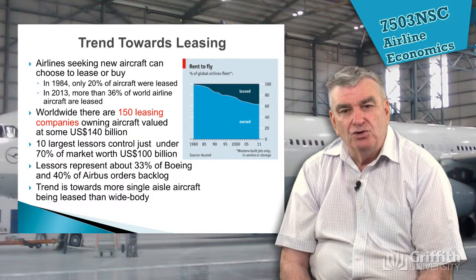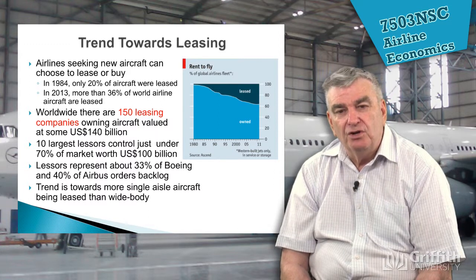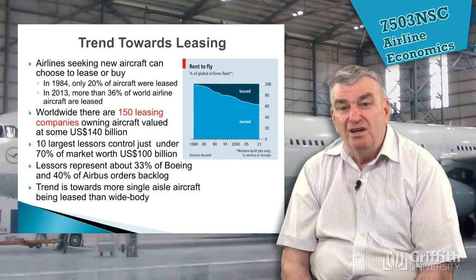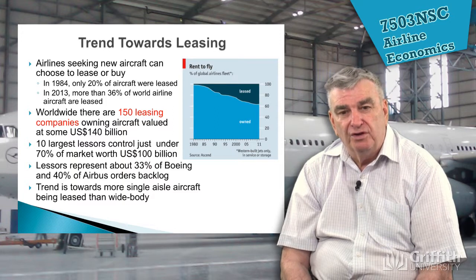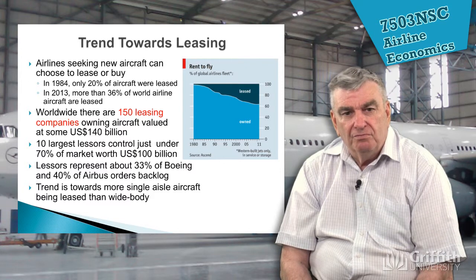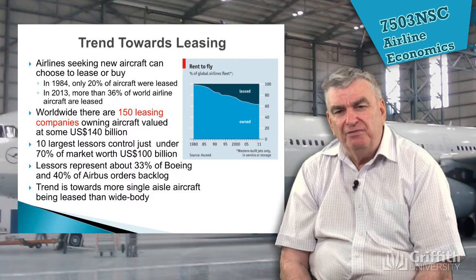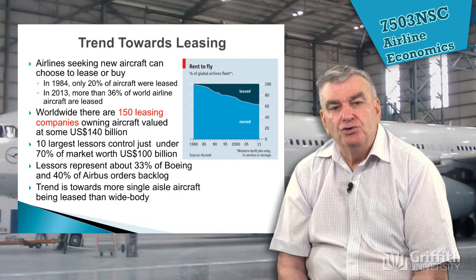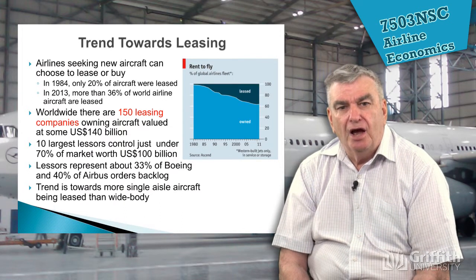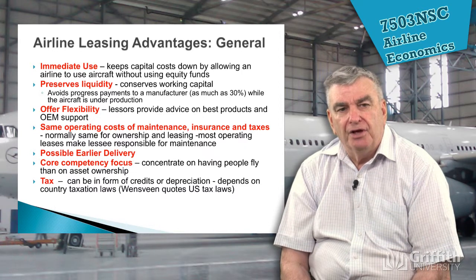There is a clear trend towards leasing. In 1984, only 20% of the world's aircraft were leased. By 2013, about 36% were leased. We're finding that soon 50% of the world's fleet will be leased. Looking at the figures, there are about 150 leasing companies — a huge number, though some may only have a couple of aircraft while others have huge fleets. We'll be studying those different companies and how they operate.